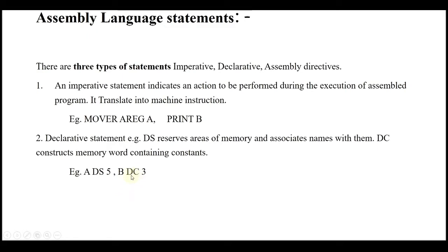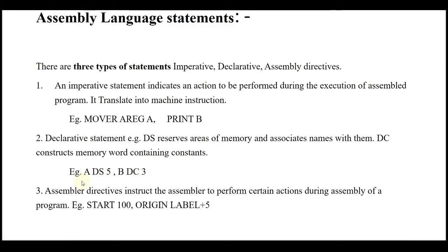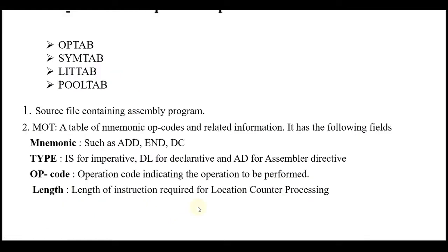DC is declarative constant and DS is declarative storage — these are the two types of declarative statements. The third type is assembly directives. Assembly directives instruct the assembler to perform certain actions during assembly of a program. For example, 'START 100' assigns the location counter. 'ORIGIN label+5' reassigns the location counter to the address of the label plus five.